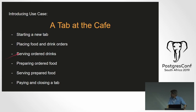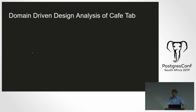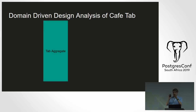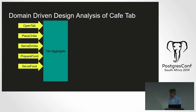Here's our use case — a plain simple one that turned out not as simple as I thought. Some events or actions we'll go through: starting a new tab, placing food orders, serving drinks, preparing food, serving food, closing the tab. We've identified the tab as our main aggregate — the thing we'll be interacting with — and we'll identify some commands we can place against this aggregate.